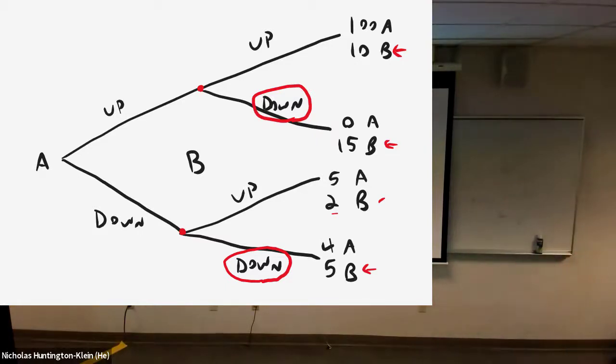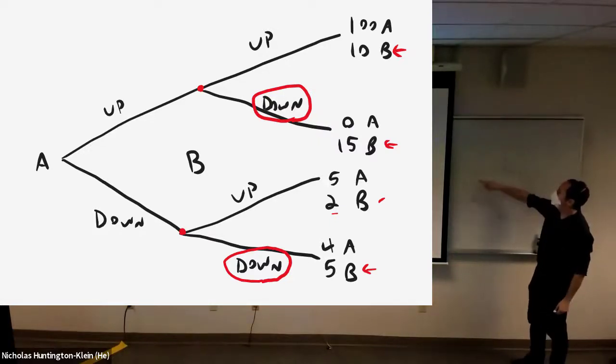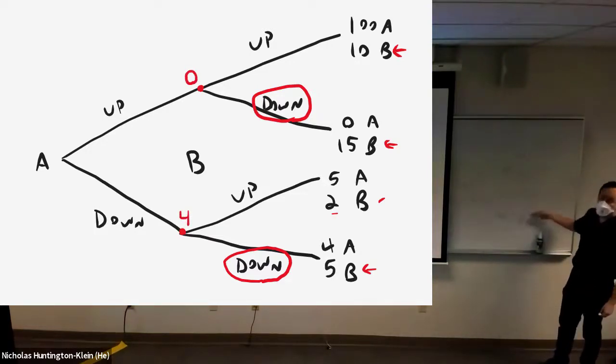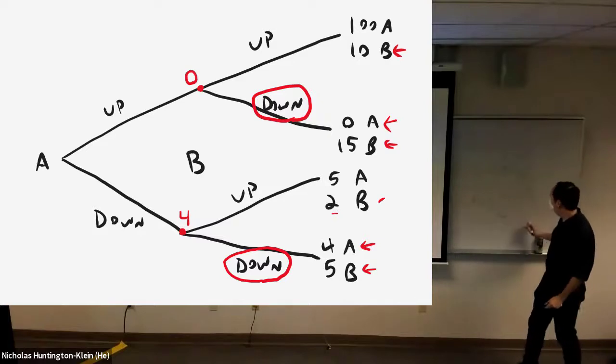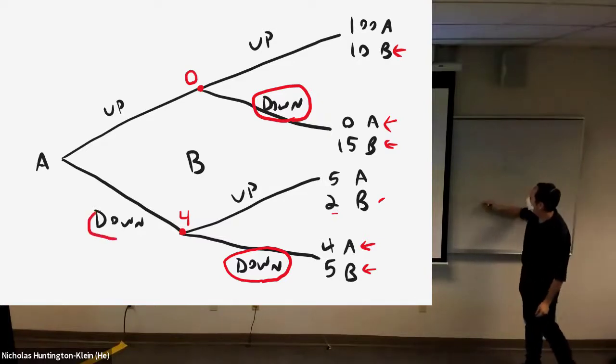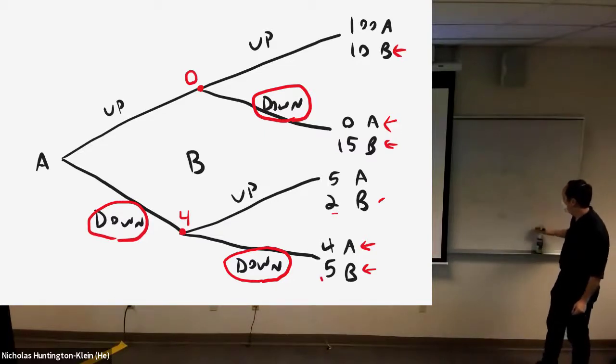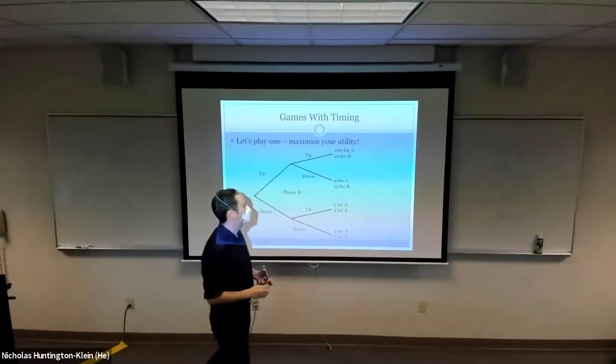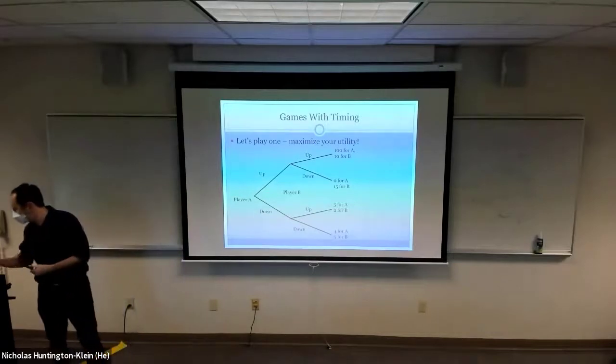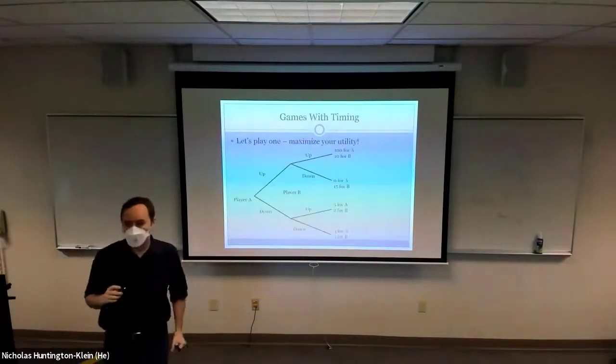Now, A knows the consequences of their actions and can make a reasonable choice between the two options they have. A said, if I go up, then B will go down and I will get 0. If I go down, B will go down and I will get 4. 4 is better than 0. Those are the only two numbers that matter for making this decision. I don't care what B is going to get. I don't care about the other options that I'm not going to touch because those just aren't going to happen. And so, 4 is better than 0. So I'm going to go down as well. We follow along the tree and we come to this as our outcome.